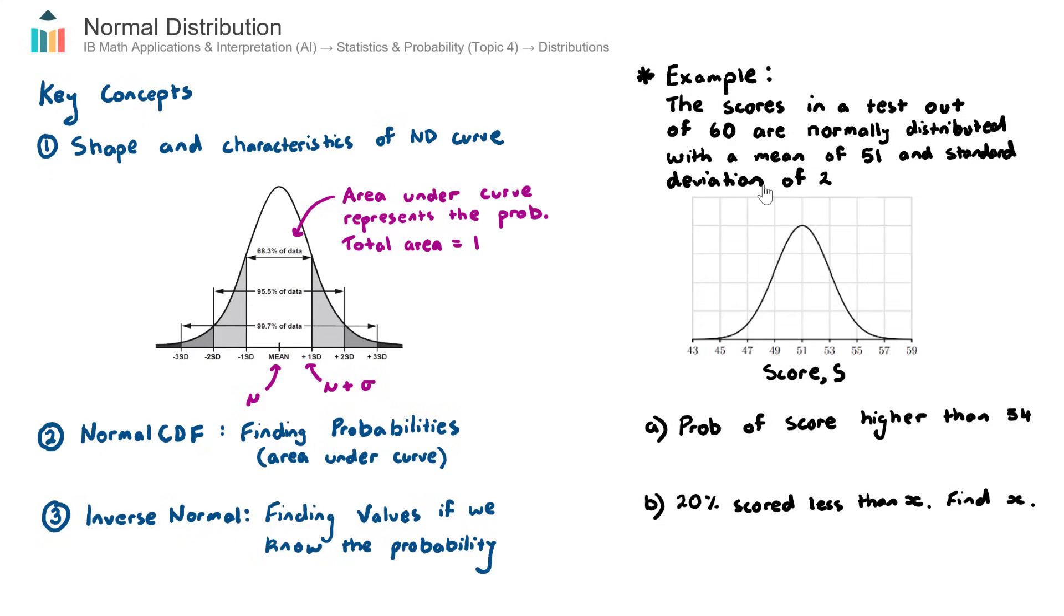And in this case here, we have a standard deviation of two, which means that one standard deviation above the mean, above the average score of 51, is a score of 53. One standard deviation below the mean would be 49, which if we go back to our diagram, it means that 68.3% of students, their scores are between 49 and 53.